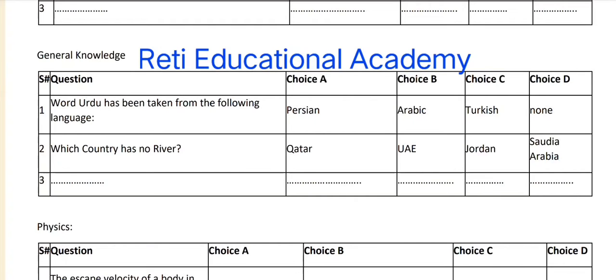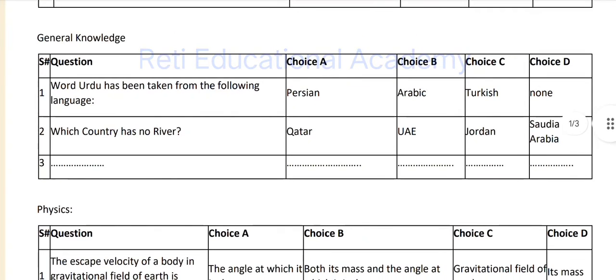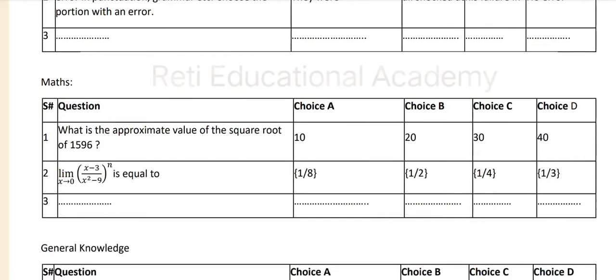Question number two: which country has no river? Option A: Qatar, Option B: UAE, Option C: Jordan, Option D: Saudi Arabia. The correct answer is D — Saudi Arabia. Now moving to the Mathematics section in the computer-based test for admissions in Bahria University all campuses.